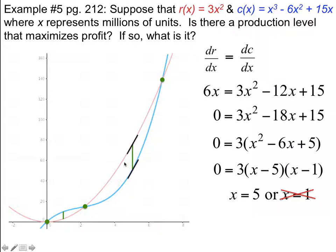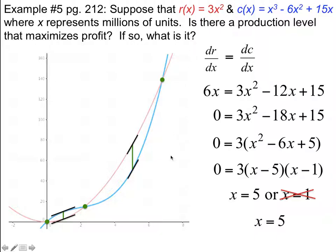At x = 5 million, the slopes are the same, and that represents the biggest gap between the two functions. If we back off from that point where the revenue slope is flatter, that gap starts to close up. So at 5 million units, the gap is the largest, representing the biggest revenue with production cost behind the revenue by the maximum amount. That's where we maximize our profit.